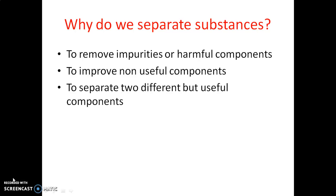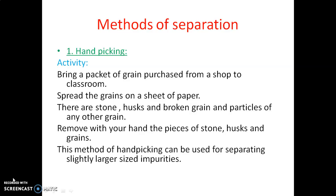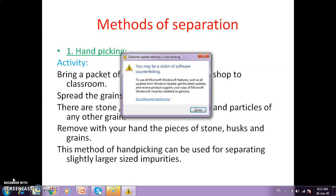So this is the meaning of separating substances. Now the methods of separation: the first method is hand-picking. If we have a grain packet, we spread the grain on a sheet, then we see what impurities are present and which particles are our grain compared to another grain.